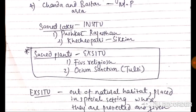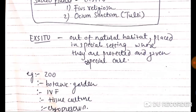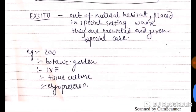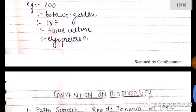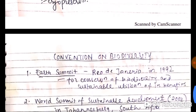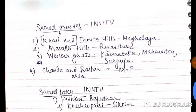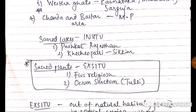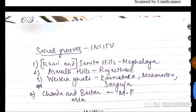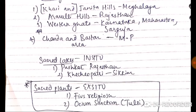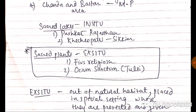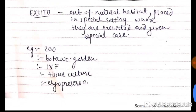Sacred lakes include Pushkar in Rajasthan and Khecheopalri in Sikkim. Sacred plants include Ficus religiosa and Ocimum sanctum (Tulsi). For ex-situ conservation, organisms are placed out of their natural habitat in special settings — such as zoological parks, botanical gardens, IVF facilities, tissue culture labs, and cryopreservation. Sacred groves and lakes are in-situ conservation, while sacred plants fall under ex-situ.